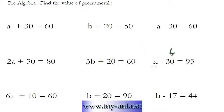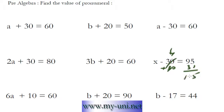This one, we can add 30 and add 30 here. So these two will cancel out. 95 plus 30 is equal to 125. The value of X is equal to 125.